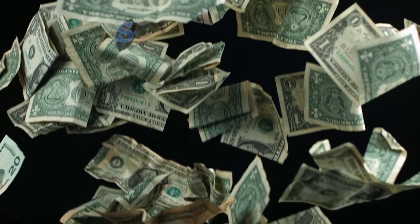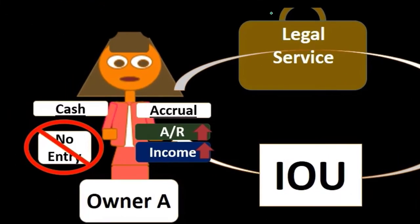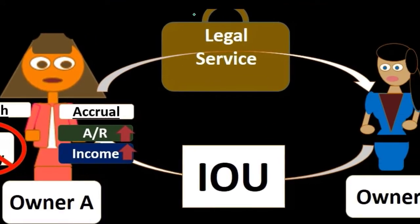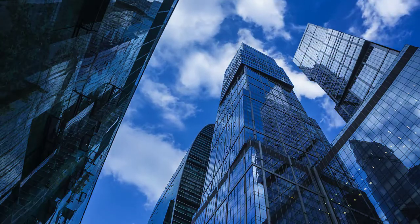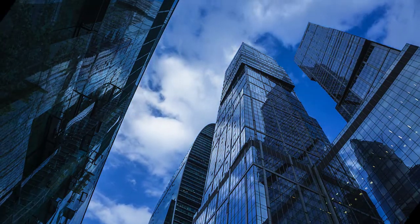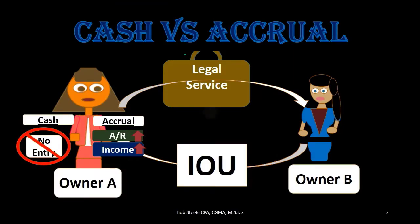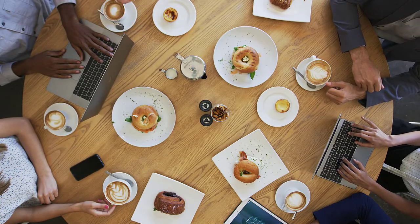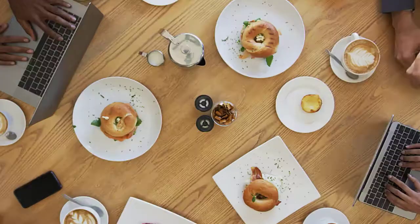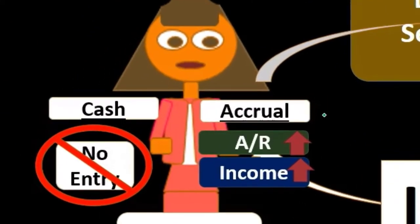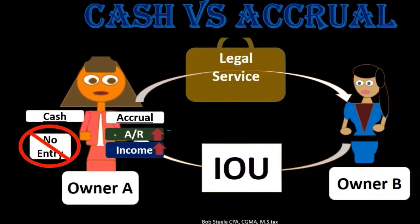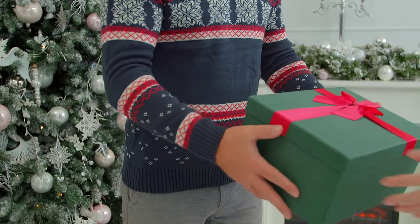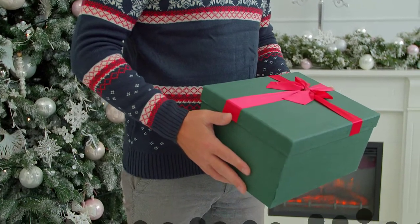This type of entity — one that does work and then bills the client — is generally driven by what type of company it is. For a law firm or CPA firm, work must be done, hours counted, and then payment received later. In that case, an accrual method must almost certainly be used because accounts receivable needs to be tracked. It would be difficult to use a cash method without the accounts receivable account to track amounts owed from clients.